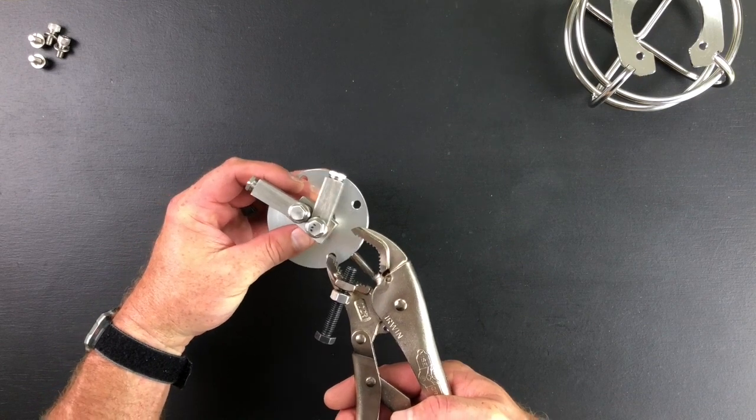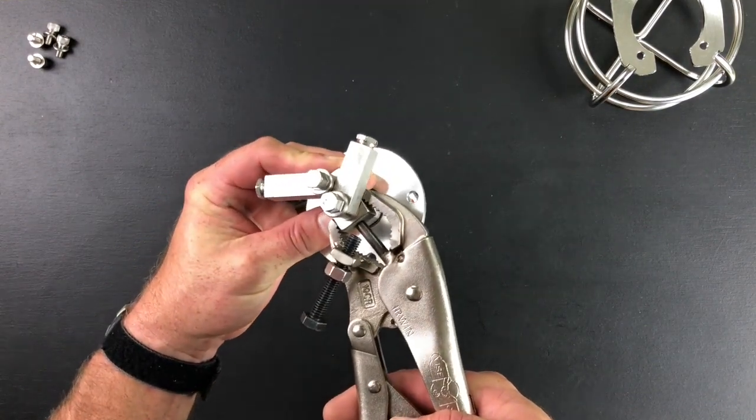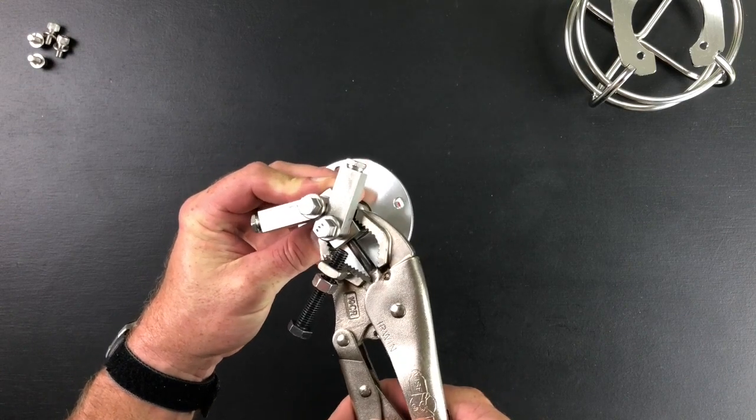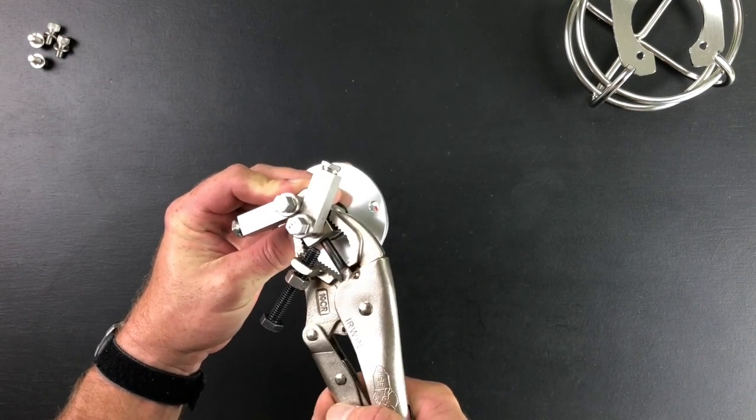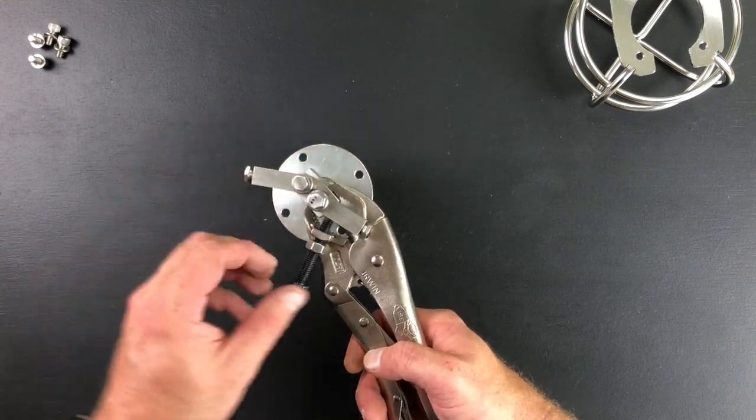A key point when using the head setter is to make sure that you have the jaw tension on your vice grips set very tight. You want to make sure that when you grip down that the jaw doesn't have any way to slip.